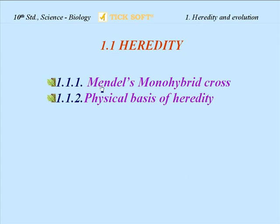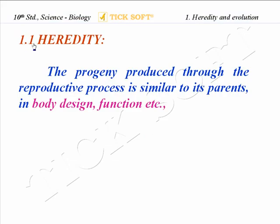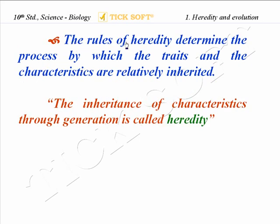Heredity involves Mendel's monohybrid cross and the physical basis of heredity. Heredity may be defined as the inheritance of characters through generations — that is, generation after generation — which is transmitted through the hereditary unit called the gene. The rules of heredity determine the process by which traits and characteristics are relatively inherited.